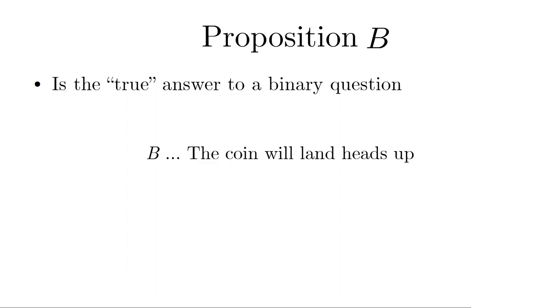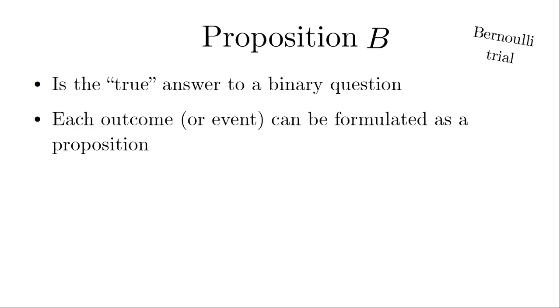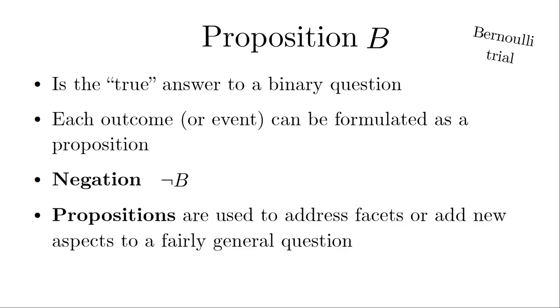In addition to outcome and event, another term plays a crucial role in probability theory, the proposition. A proposition is a statement that can either be true or false, nothing in between. Like, the coin will land heads up or Caesar was a Roman. Propositions are particularly obvious in binary experiments. These are experiments with only two outcomes. Such an experiment is called Bernoulli-trial. One of the most famous examples is tossing a coin, which has the two outcomes heads and tails. Every event A can be rephrased as a proposition by stating, the experiment will have event A as its result. This proposition can be true or false. The opposite of proposition B can be addressed using the negation operator, NOT B. We will discuss propositions and their usage in Bayesian probability theory in more detail in Unit 3.